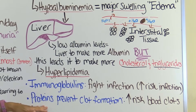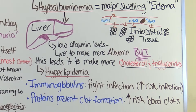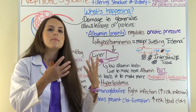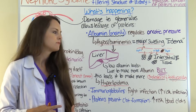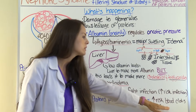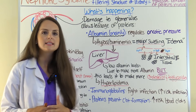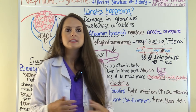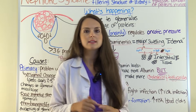These patients also lose proteins that play a role in preventing clot formation. If we're losing proteins that prevent random blood clots from forming, the patient is at increased risk for blood clots. As a nurse, you want to watch for signs and symptoms of a possible pulmonary embolism or deep vein thrombosis.